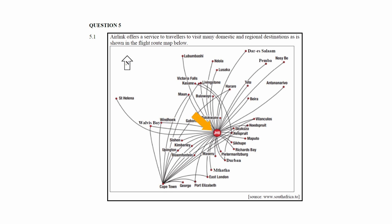From Johannesburg to Darul Islam, the person will be traveling in a northeasterly direction, and from Darul Islam to Pemba, the person will be traveling in a southeasterly direction.